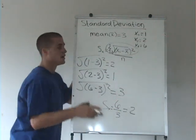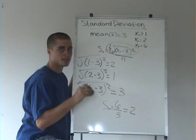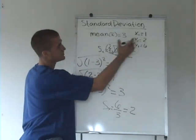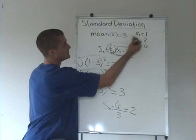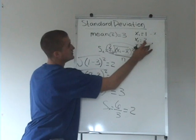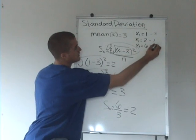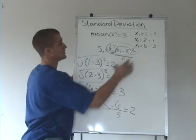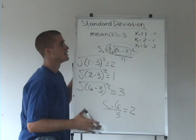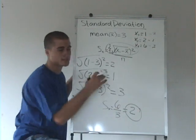And what that means is, on average, the number in the set differs from the mean by 2. And you can see that it's obvious here because 1 differs by 2 from the mean, 2 differs by 1, and 3 differs by 3. So basically what we're doing is taking the average of the difference from the mean. And that's what the standard deviation is in this case, it's 2.